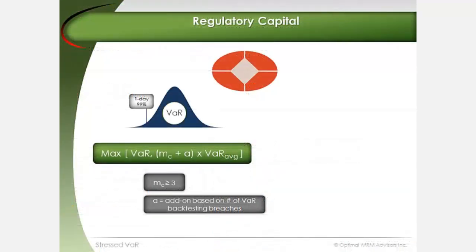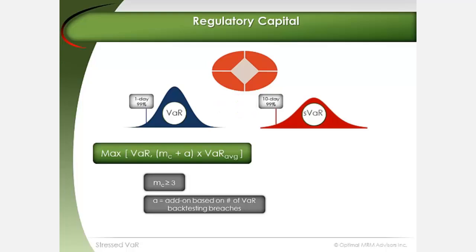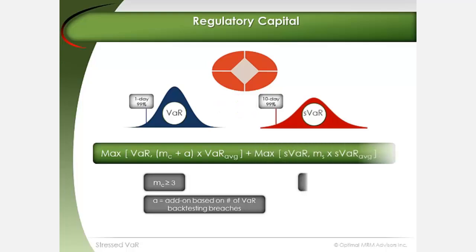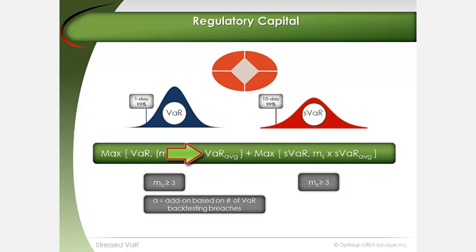Basel 2.5 requires banks to calculate two VAR measures: the usual VAR and stressed VAR. The two VAR measures are combined to calculate a total capital charge, where VAR and SVAR represent the 1-day 99% VAR and 10-day 99% stressed VAR respectively. VAR_avg and SVAR_avg represent the average VAR and stressed VAR calculated over the previous 60 days, and M_c and M_s represent multipliers determined by local bank supervisors, which have a minimum value of 3.